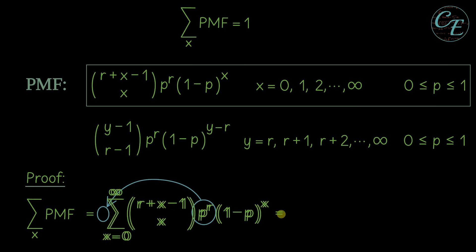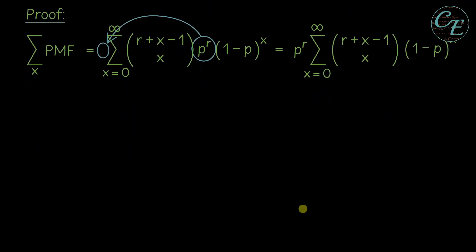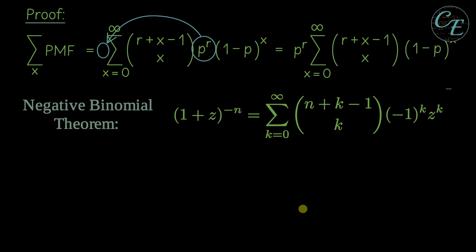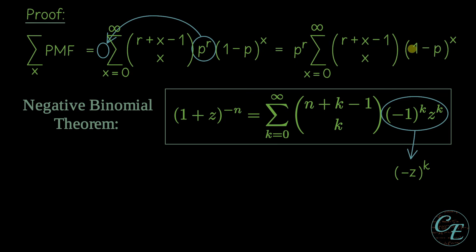So now it is equal to P raised to R outside of this summation. Now to simplify the resulting expression, we will use the negative binomial theorem, which has the following expression. Now if you want to prove this theorem, I have provided it in a separate video and the link is shown in the description below. So you may check it out. Now for these two terms in here, we can combine negative 1 and Z to form negative Z raised to K.